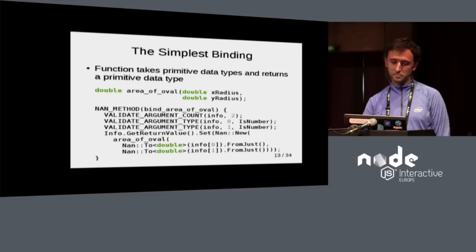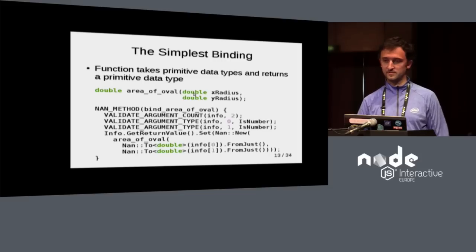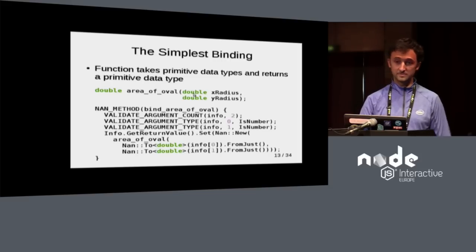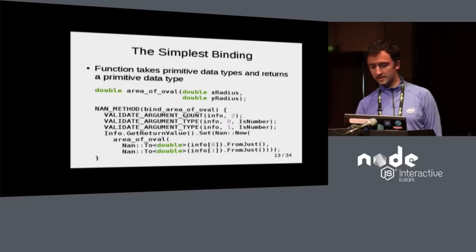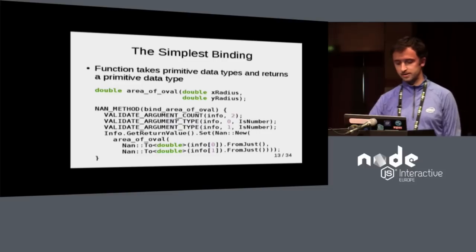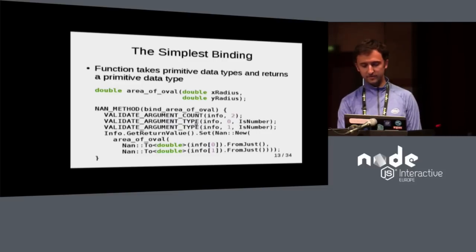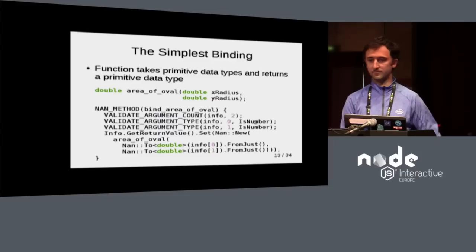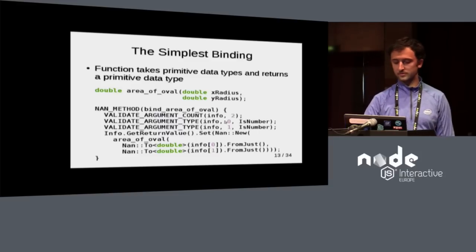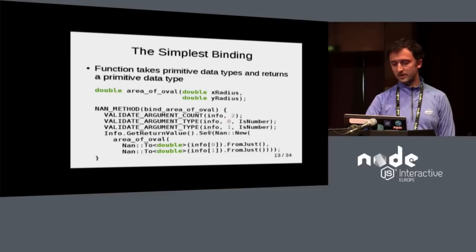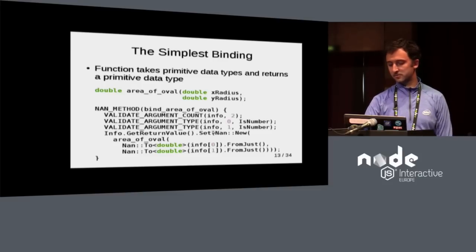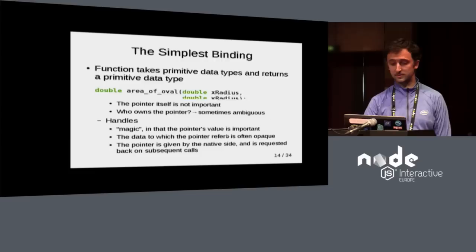Here's an example of a simple binding — a very simple function that takes primitively valued parameters and returns a primitively valued result. These are macros which check: if the argument count is not two, throw an error and return; if argument zero is not a number, throw an error and return. Then you just call the C API, set the return value right away, and that's it — very simple.